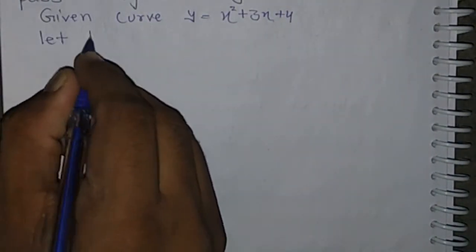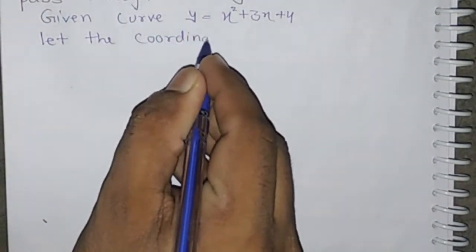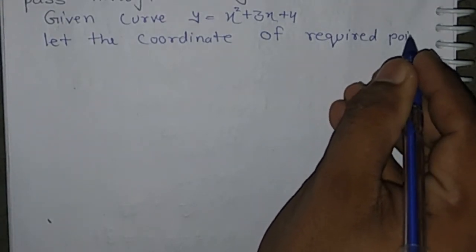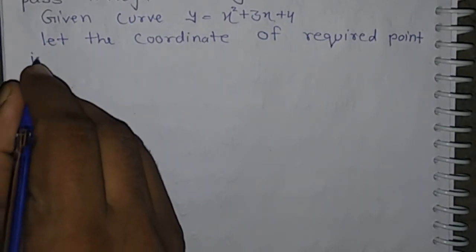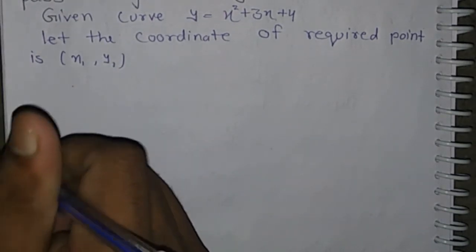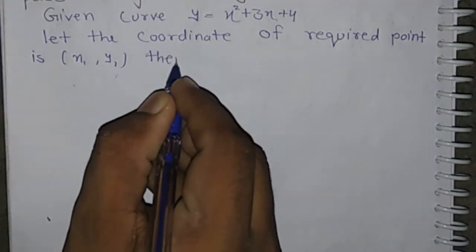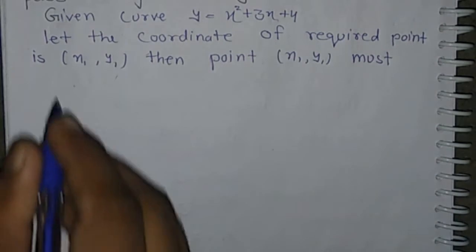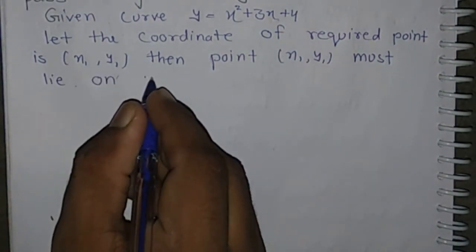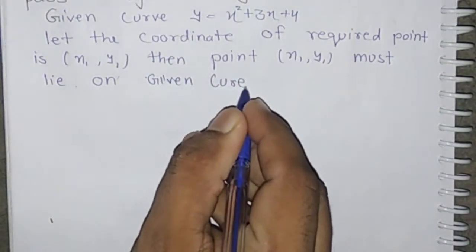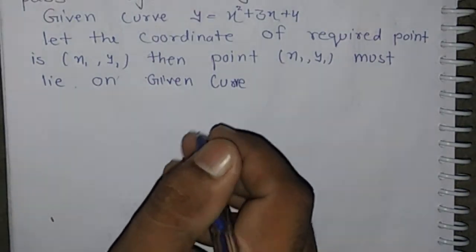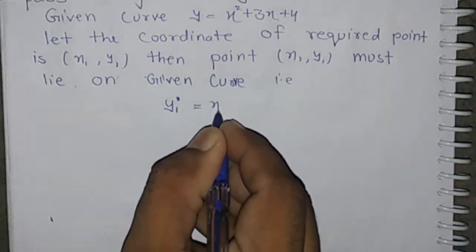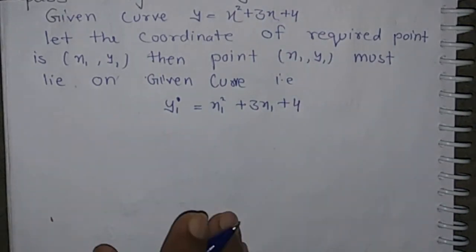Let the required point have coordinates (x₁, y₁). Then point (x₁, y₁) must lie on the given curve. This means the point will satisfy the equation, so y₁ = x₁² + 3x₁ + 4. This is our first equation.